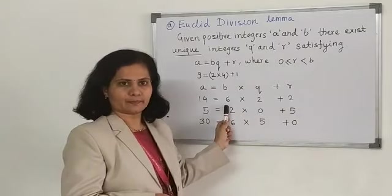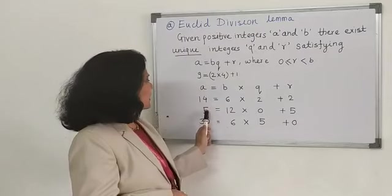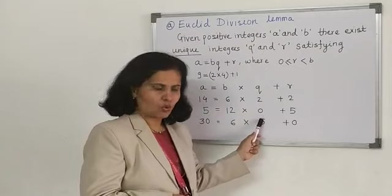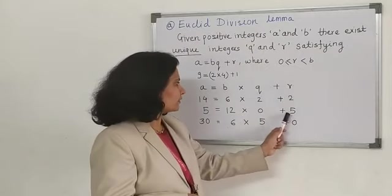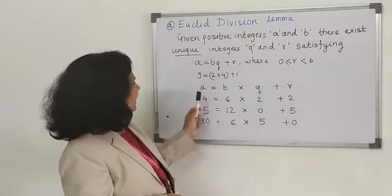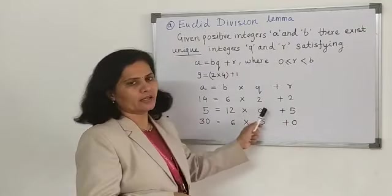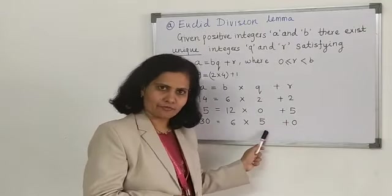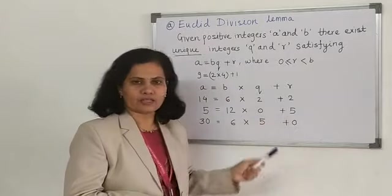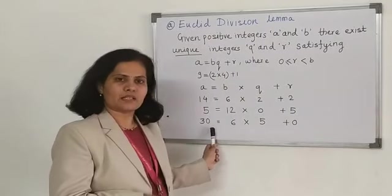If the dividend is less compared to the divisor, quotient is 0 and remainder is 5. Here also this condition is getting satisfied. Again, taking 30 divided by 6 - quotient is 5 and remainder is 0. In all these cases, this condition is satisfied.